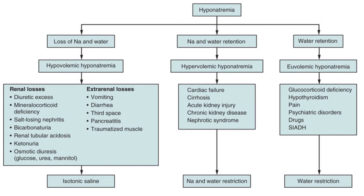Here is our first basic diagram — worth pausing the slide to look through it. Essentially, it tells you that the three different volume levels — normal volume, too much, or too little — will signify different causes. We'll go through this again at the end of the lecture.